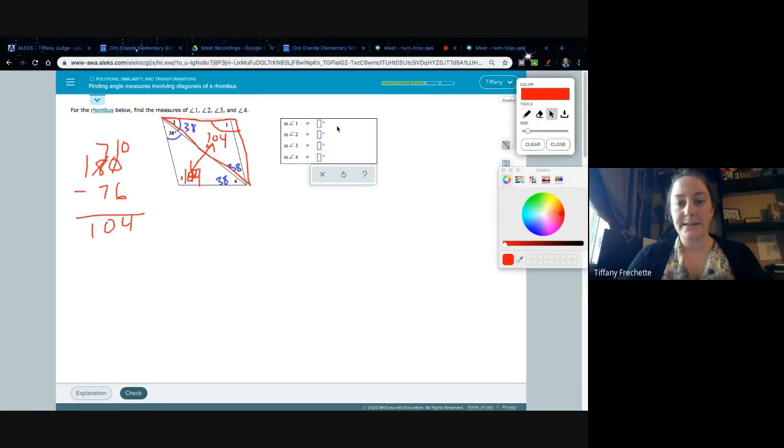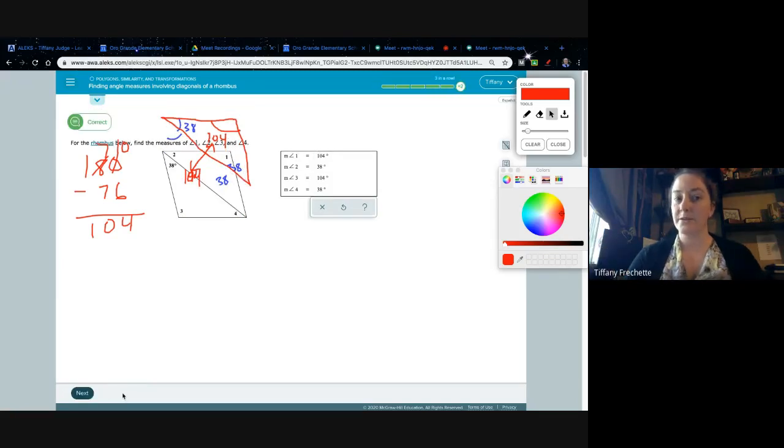So that is the last step on that one. We just need to fill in what we have. 2 is 38. 2 is 104. And 4 was 38. All right. Check. Okay. We're all done with that one.